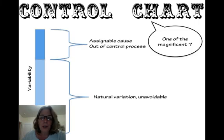So again, control charts are one of the Magnificent Seven, and it's trying to track variability into cause, assignable causes and unavoidable natural variation.